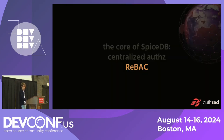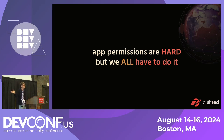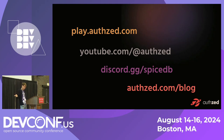So that's the power of ReBAC. To summarize: building app permissions is really hard, but we all have to do it. If you're going to do one thing, it's to evaluate pre-existing authorization tools — stop building this yourself. Whether it's SpiceDB or any other tool, look for something that will help you build systems that are cohesive and keep teams collaborating effectively. You can go to the SpiceDB playground, watch videos, and learn more. You can also hit up our blog.